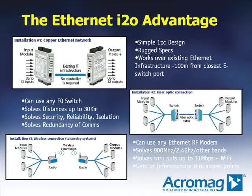Because Acromag's Ethernet I2O technology is embedded within the I/O modules, users interested in wireless systems can now use any Ethernet modem vendor. They are no longer tied to the limitations of telemetry suppliers that bundle I/O with a fixed radio modem package or frequency. Through the use of high-speed Wi-Fi bands, wireless Ethernet solutions can achieve throughputs in excess of 11 megabits. Systems requiring wireless and high speed will benefit from Acromag's open architecture I2O solution.